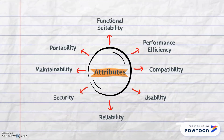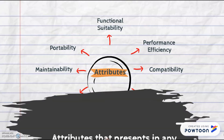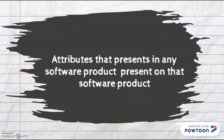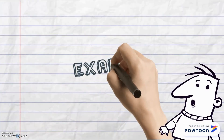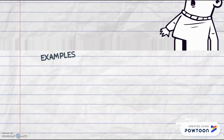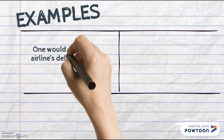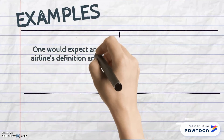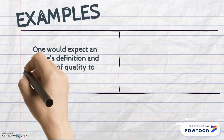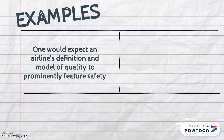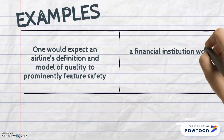The attributes are: function and stability, performance efficiency, compatibility, usability, reliability, security, maintainability, and portability. Remember, any attributes present in a software product reflect that product's quality profile. For example, an airline's definition of quality would prominently feature safety, while a financial institution would tend to highlight data and physical security.